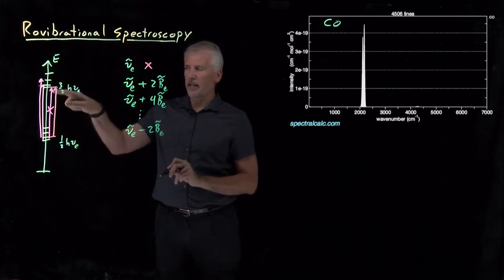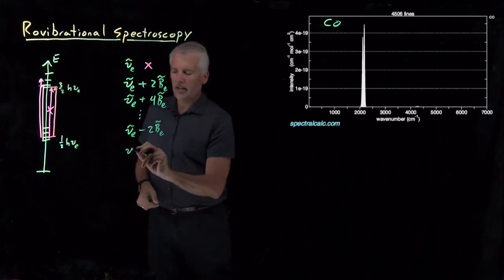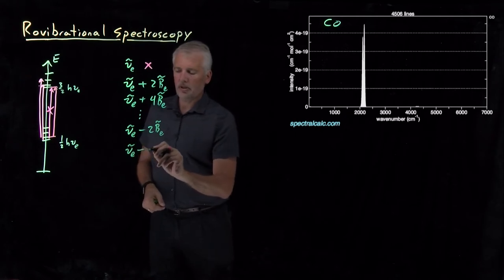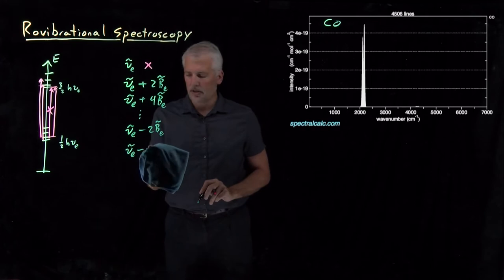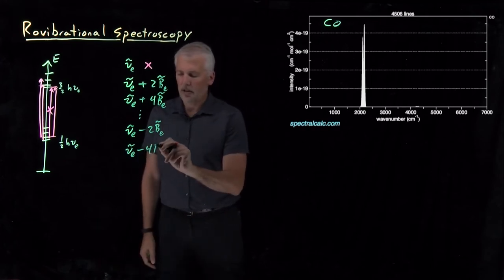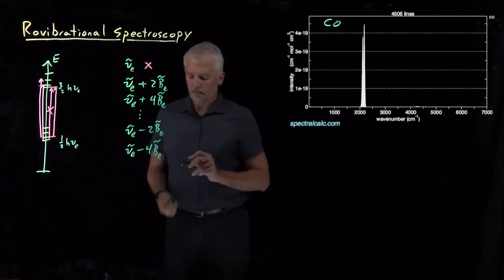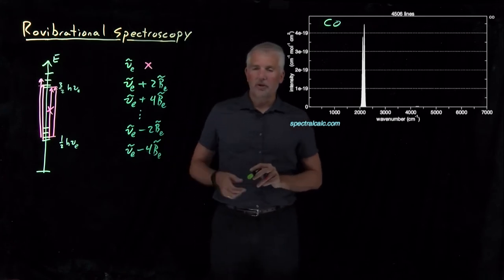Or if I start doubly excited and end up only singly excited, I go from six multiples of the rotational constant to two. So then I've lost four multiples of the rotational constant.